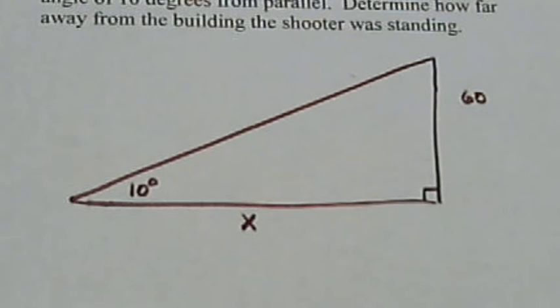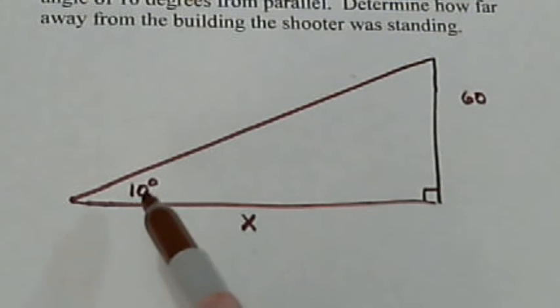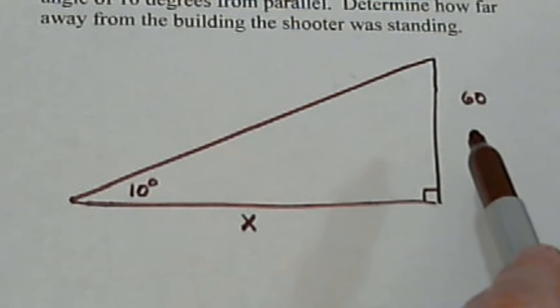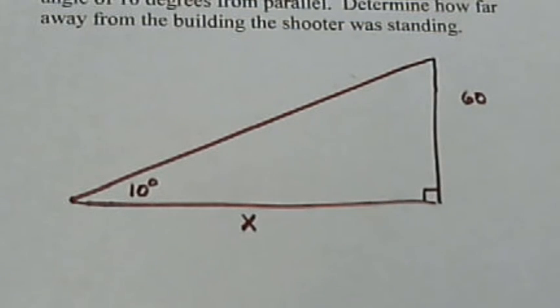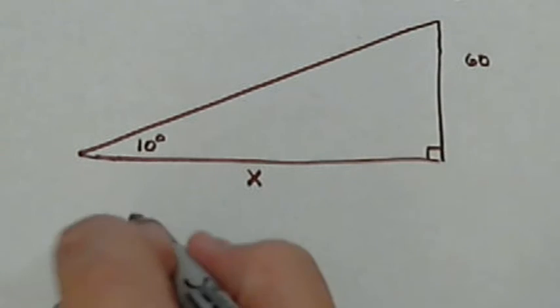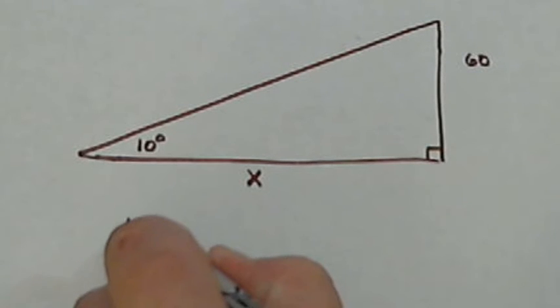So let's see what we've got. We've got our angle, we've got the opposite side of that angle and we've got the adjacent side. So this is the information we need to use the tangent.